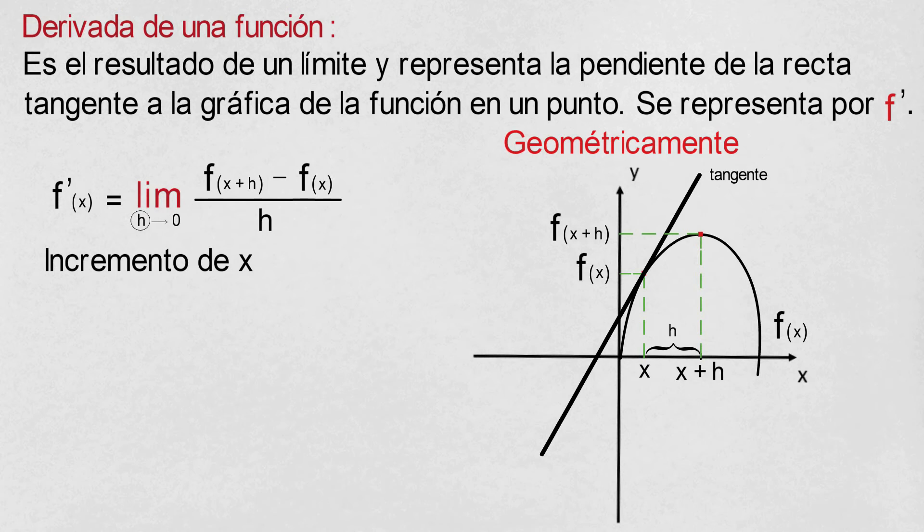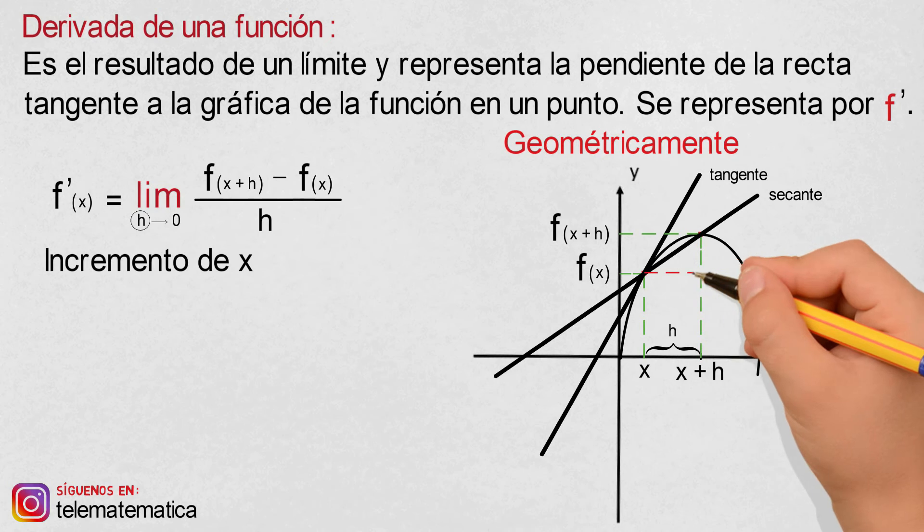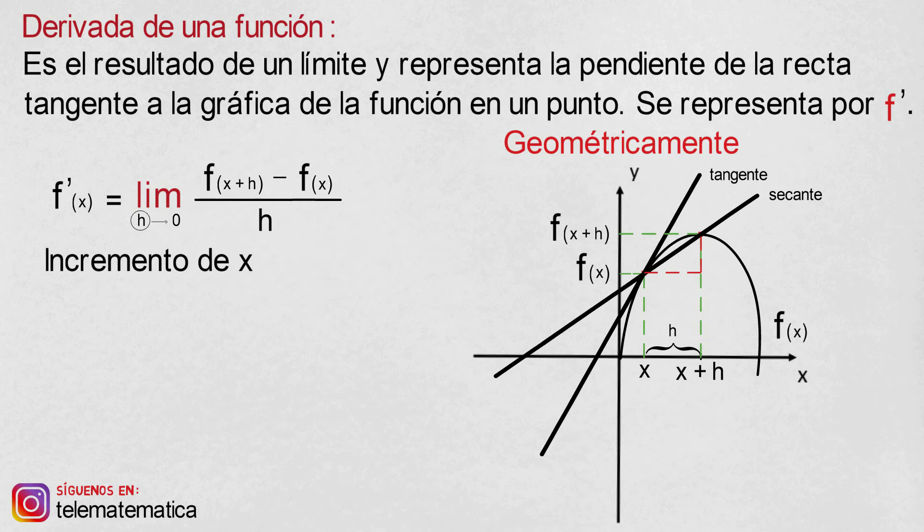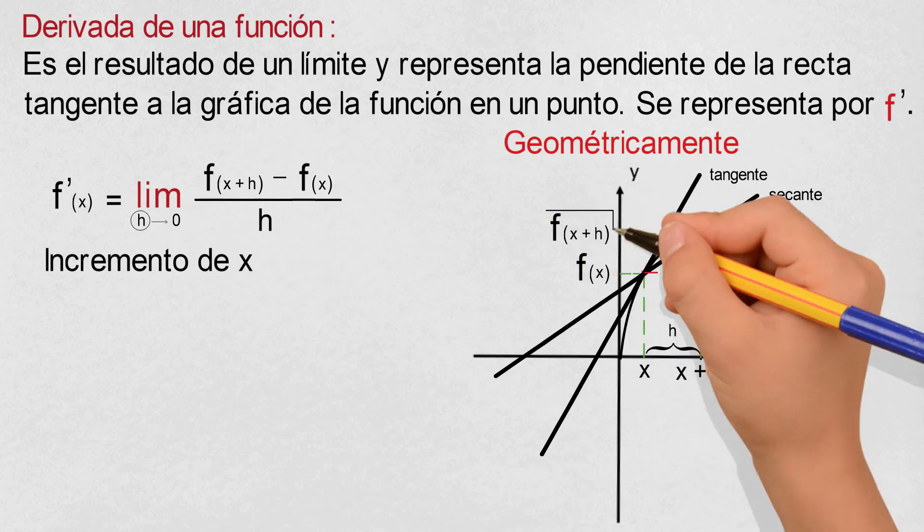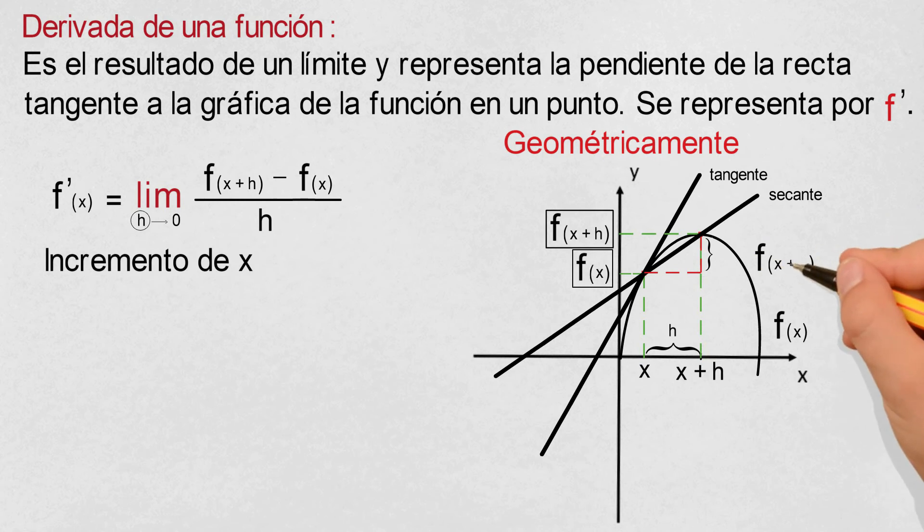Already having two points, we can draw the secant line that passes through them and calculate the slope. For this, we draw the right triangle that is formed and the slope is calculated as the quotient between the variation in the y-axis, which is the difference f(x+h) minus f(x), and the variation in the x-axis, which is the value of h.